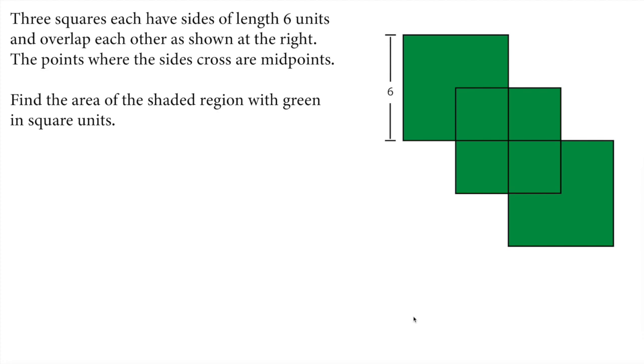Let's get started. The squares intersect with each other, and they are midpoints of the other squares. We are given that each side length is 6 units.